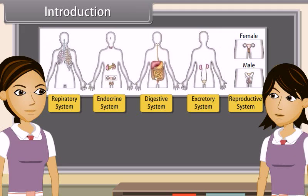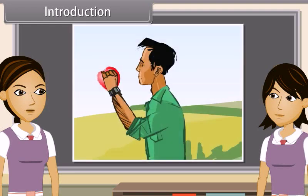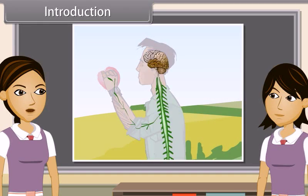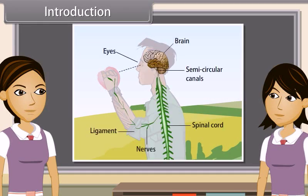In other words, all the organs of a system coordinate with each other so that the system can work properly. Coordination is the working together of the various organs in a systematic manner so as to produce a proper reaction to the stimulus.